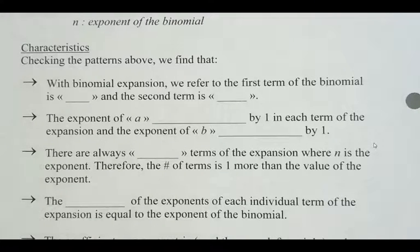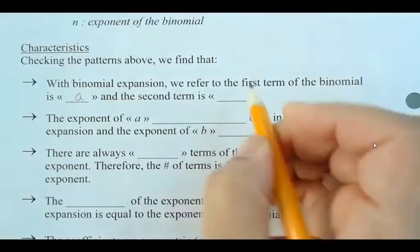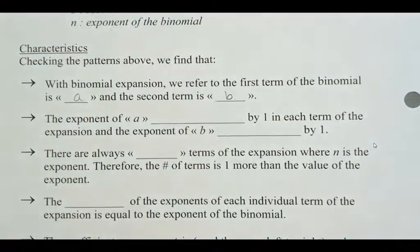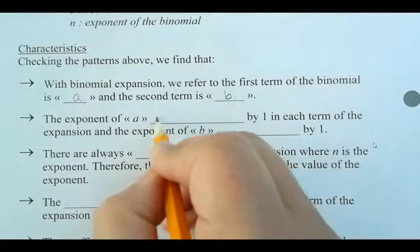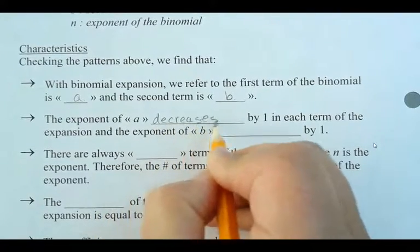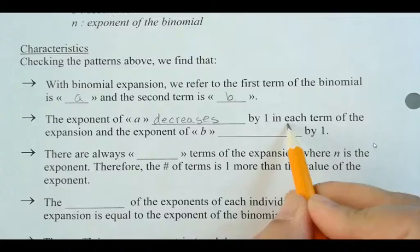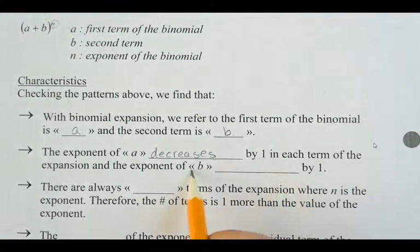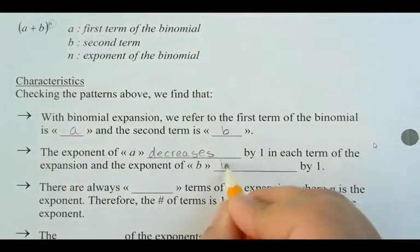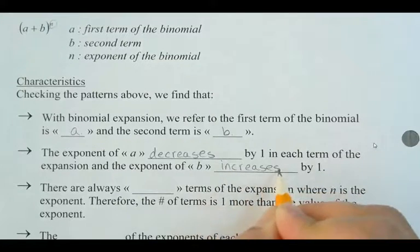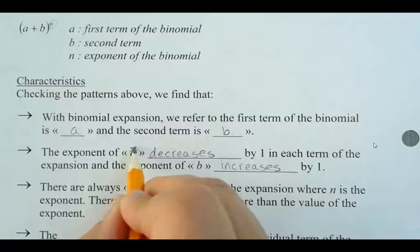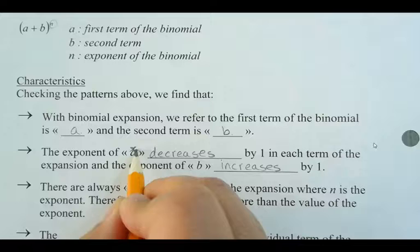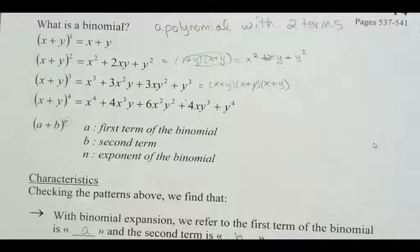Well, we see with the binomial expansion, we refer to the first term of the binomial as A, and the second is B, okay? The exponent of A decreases by one in each term of the expansion, and the exponent of B increases by one. So what that's referring to in the example above, we've got X here, right? For the A. So I'm going to slide back up after the delay, okay?